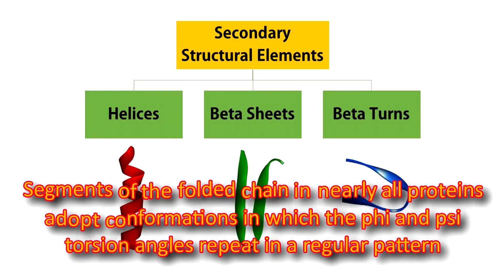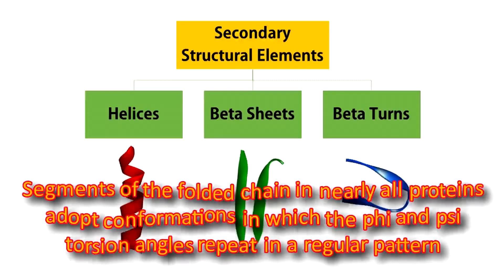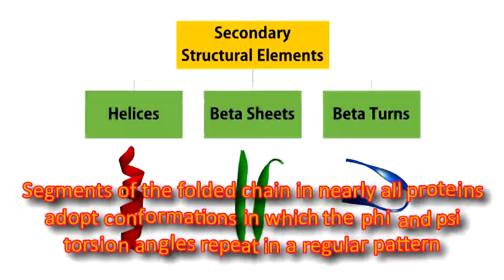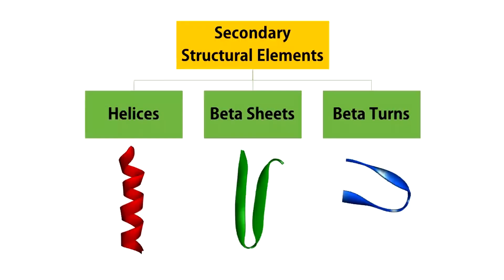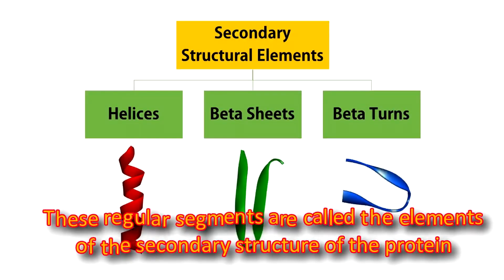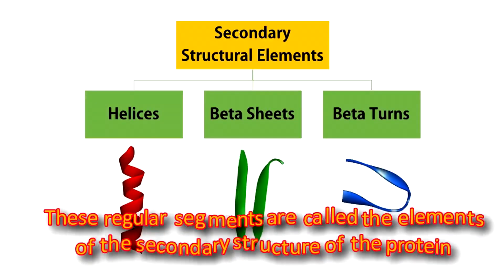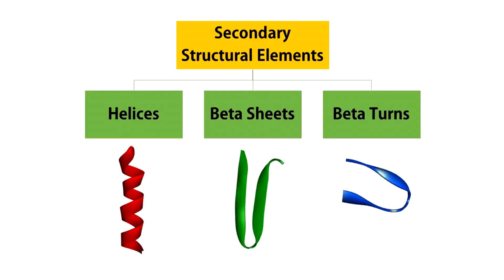Segments of the folded chain in nearly all proteins adapt conformations in which the phi and chi torsion angles repeat in a regular pattern. These regular segments are called the elements of secondary structure of the protein. Three general types of secondary structure elements have been identified.